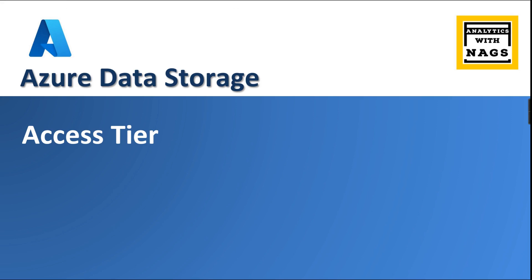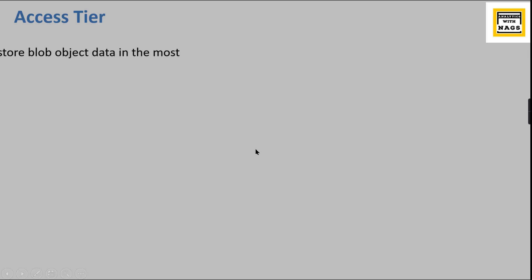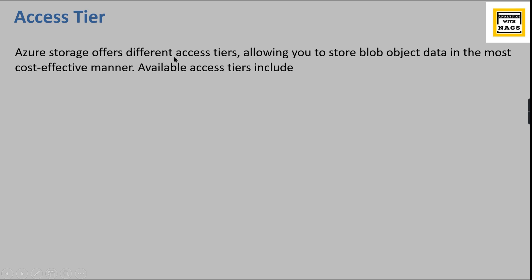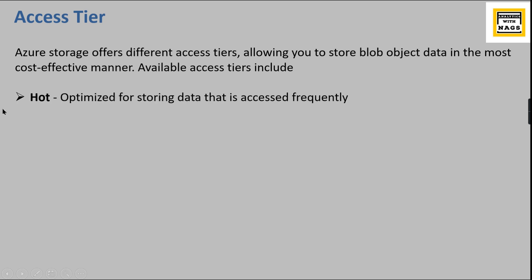Welcome to Analytics with Nags. In this video we're going to see what is Access Tier in Azure. Access Tier in Azure allows you to store blob object data in the most cost-effective manner, based on how frequently you are going to use it. Let's check out what the different options are: Hot, Cool, and Archive.